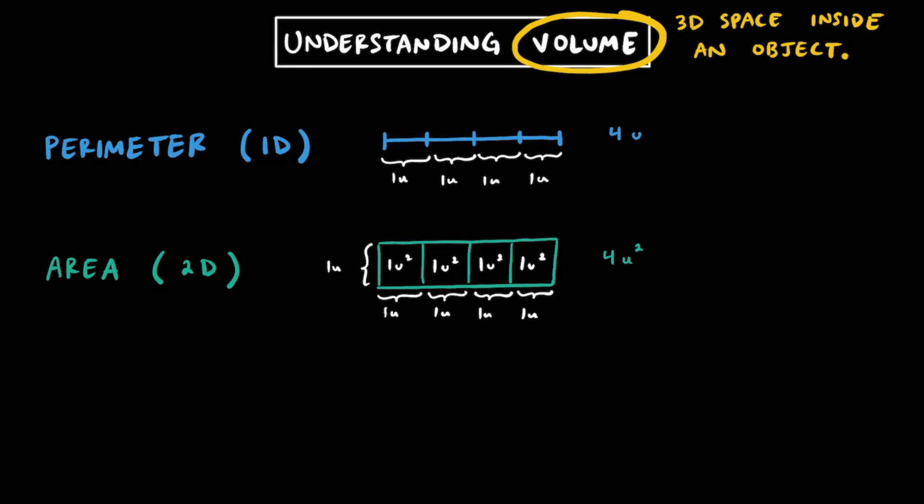Given that the area of each of these squares is one unit squared, the total area of the rectangle is 4 units squared. Now let's add in a third dimension and talk about volume. Check out this rectangle here, which is identical to the one above it, but we're going to add a third dimension giving it some depth. This would be considered a rectangular prism, and we can split it into cubes instead of squares.